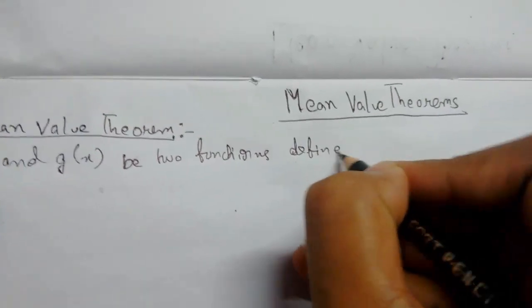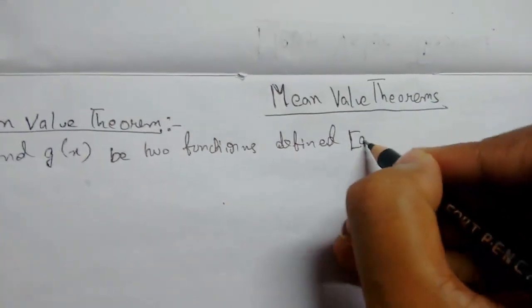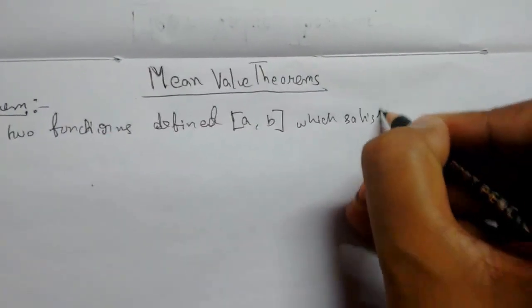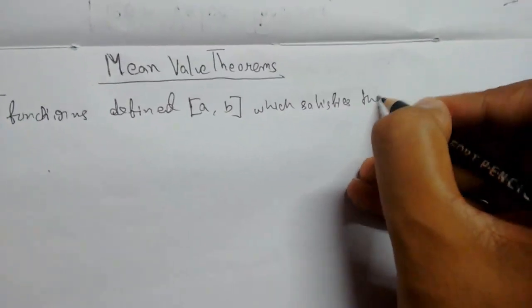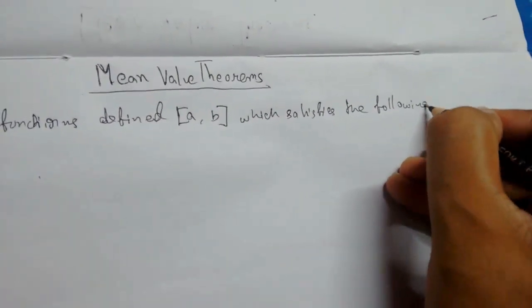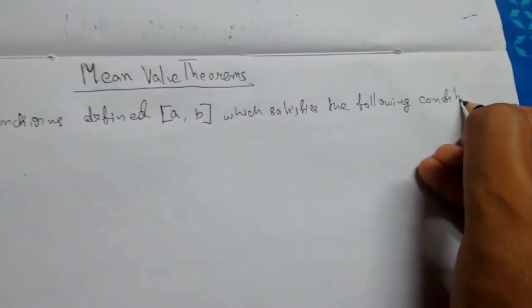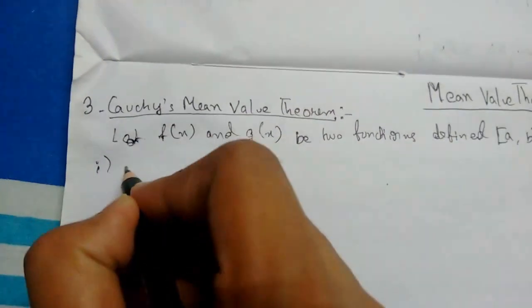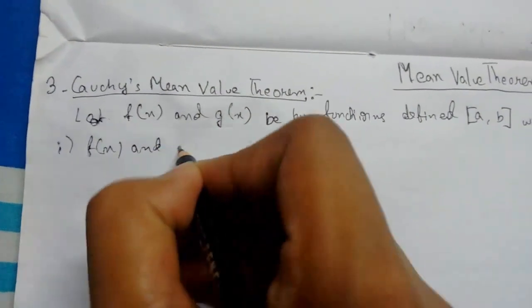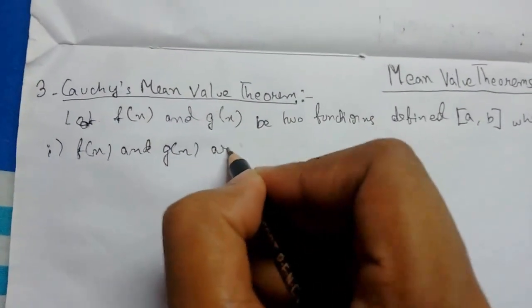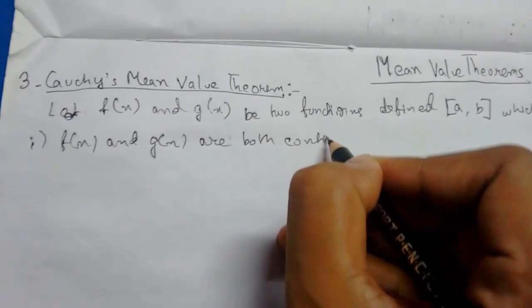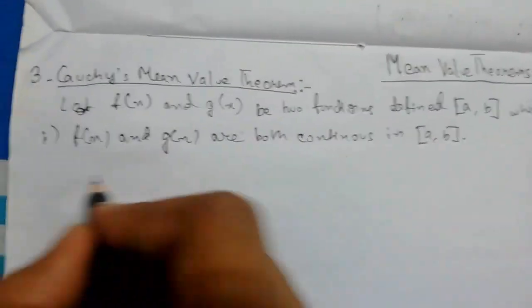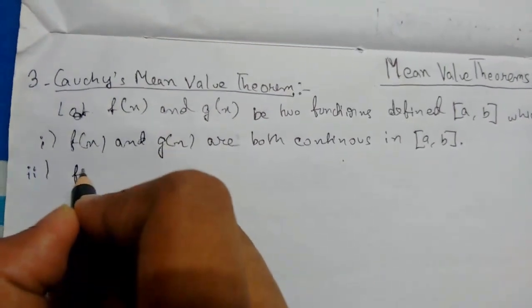Condition number one: f(x) and g(x) are both continuous in the closed interval [a, b]. Condition number two: f(x) and g(x) are both derivable in the open interval (a, b).